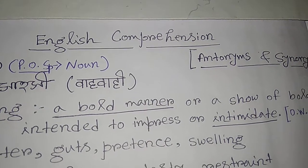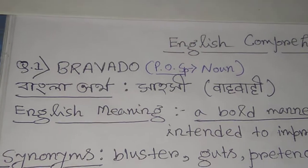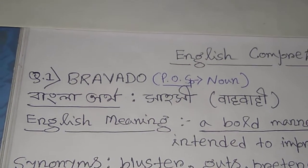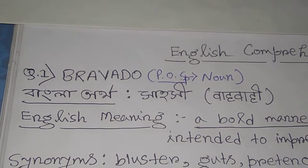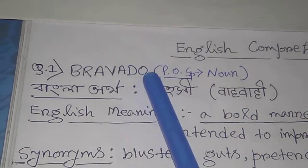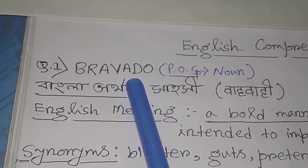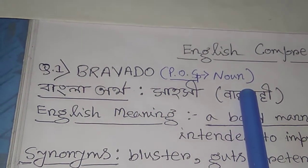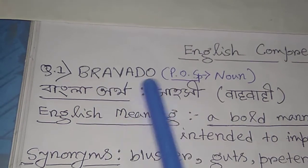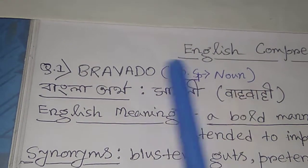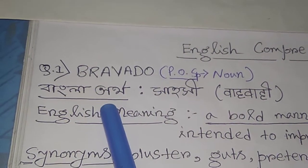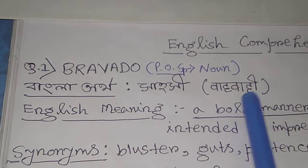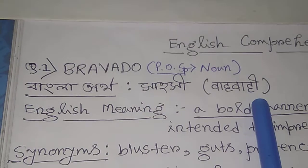The first word is 'bravado'. Its part of speech is a noun. In Bengali it means 'sahusi', and in Hindi it means 'waho wahi'.